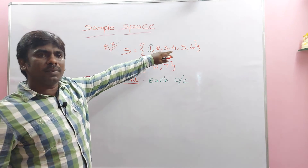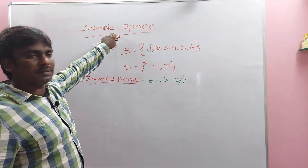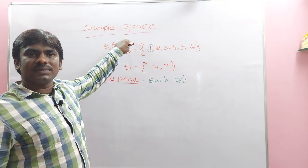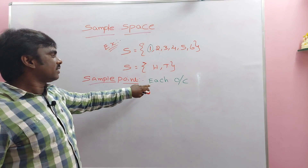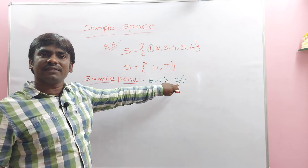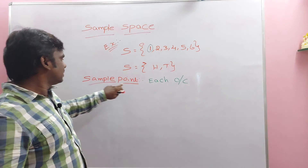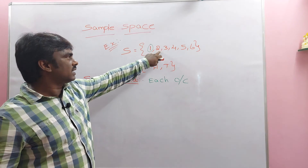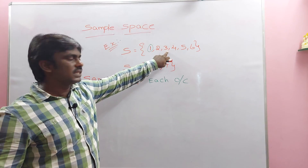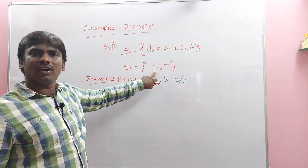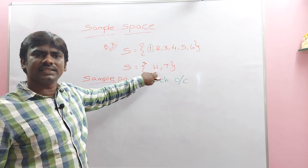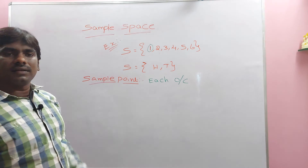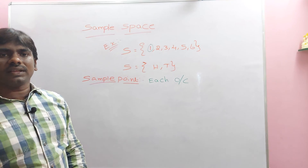The set of all possible outcomes is the sample space. Each outcome of a random experiment is a sample point. For example, 1, 2, 3, and head are each individual outcomes — each one is a sample point. Head is an outcome of a random experiment, so head is a sample point.